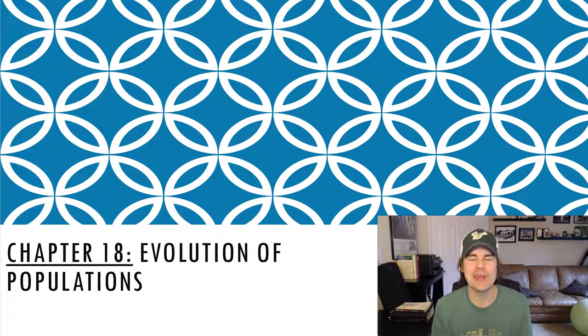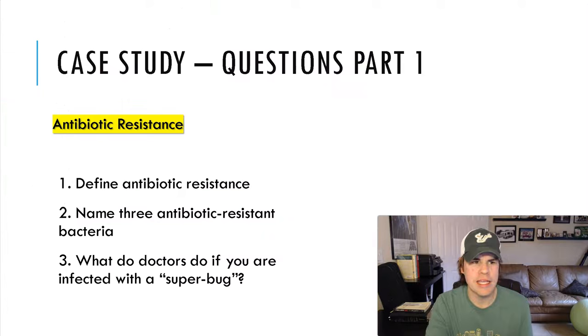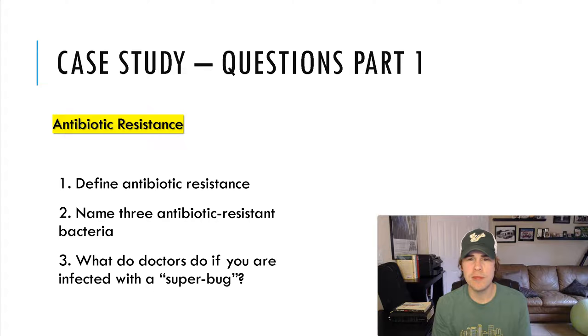Today in this video I'm going to cover Chapter 18, Evolution of Populations — the first lesson and part of the second lesson as well. In your book there are case studies at the start of each chapter. This chapter deals with antibiotic resistance, and I definitely want you to read about that because it's very important in the world that you will grow up and live in.